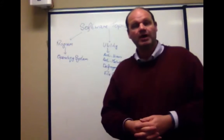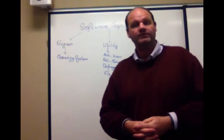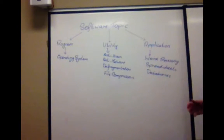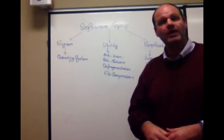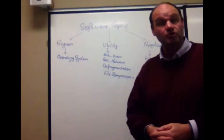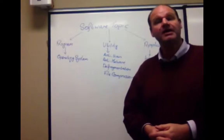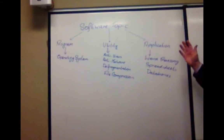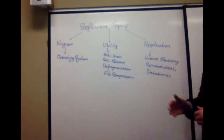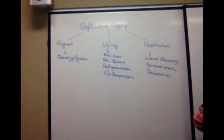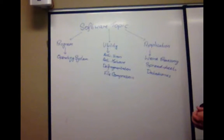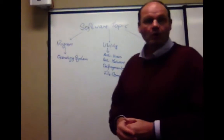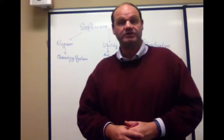So that brings us on to our final area of software, and this is application software. We are most familiar with this type of software because it gets us to be able to do things and complete tasks. There are lots and lots of different types of application software, but three of the most recognizable ones are word processing, spreadsheets, and databases.